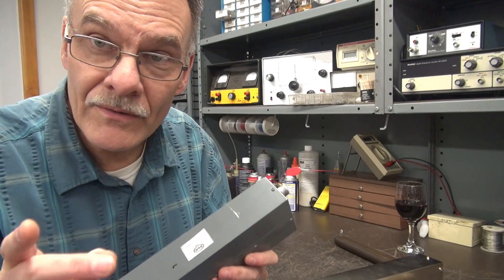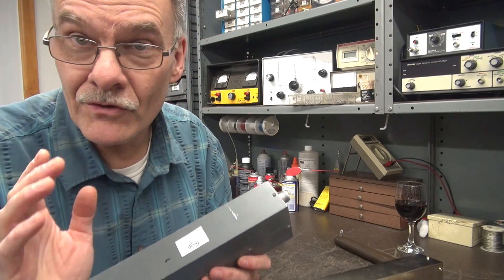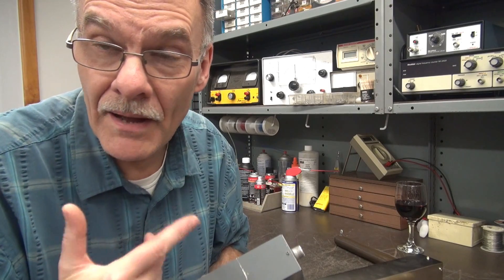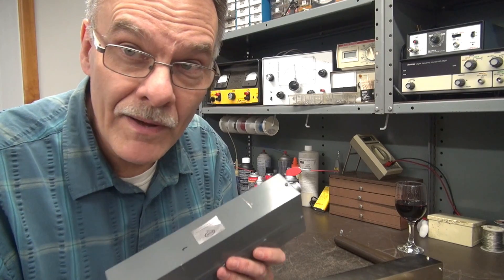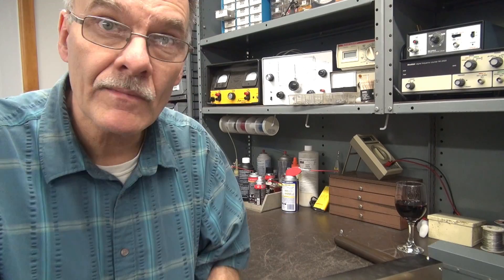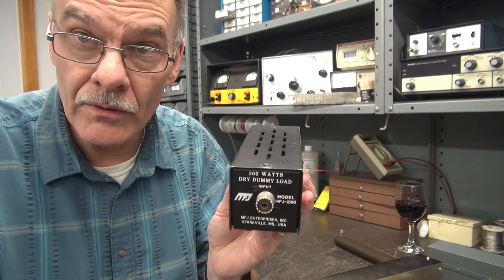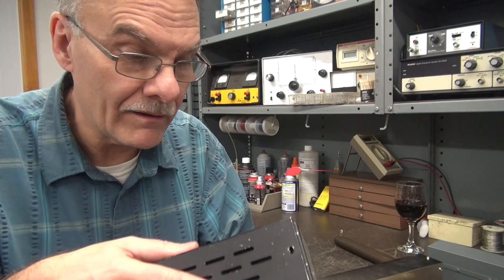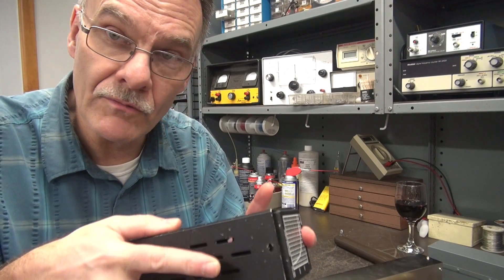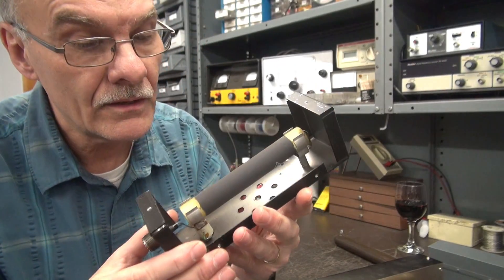Now let me show you what MFJ offers for about 60 bucks and then you can decide should I buy that or should I make my own. After you see this you probably want to make your own. Alright, so here is a MFJ model 260 dry dummy load. They're okay for the money, they're not too bad. I've already got the screws pulled out so I can show you the inner workings.